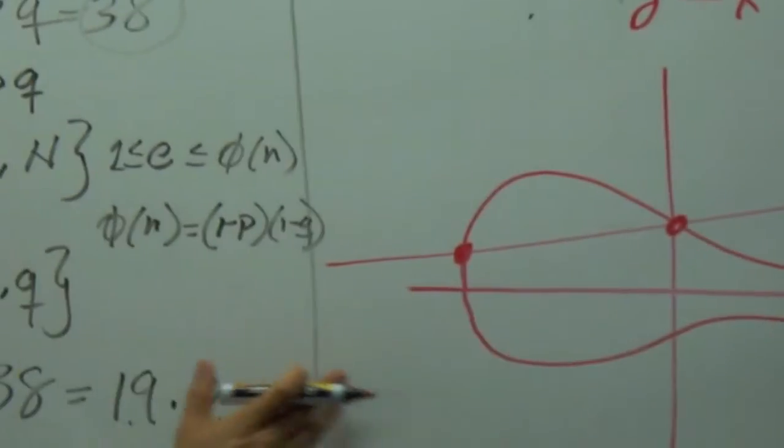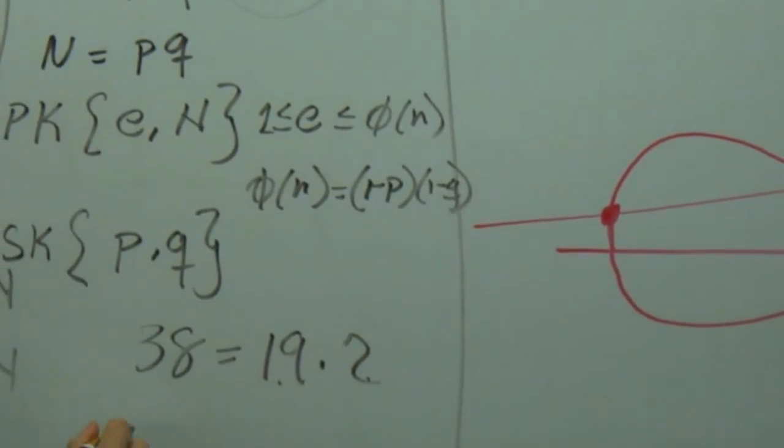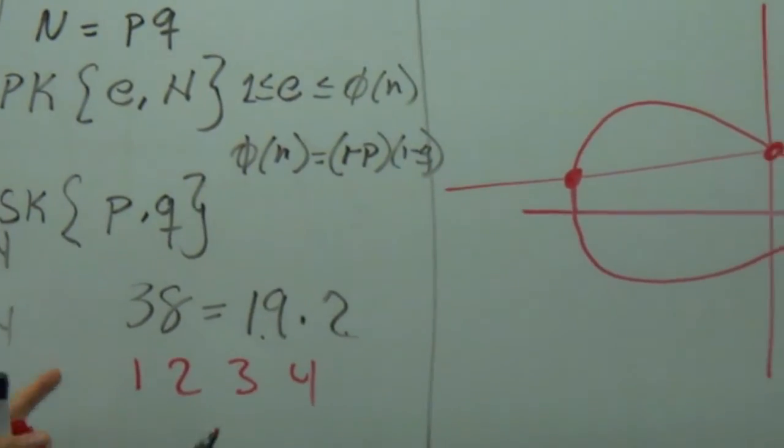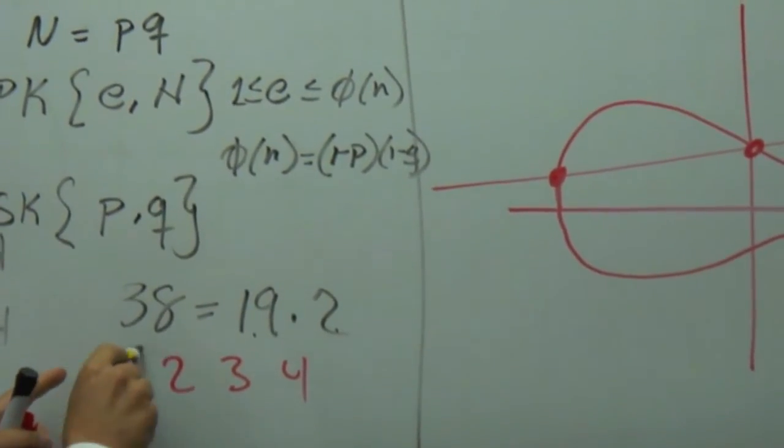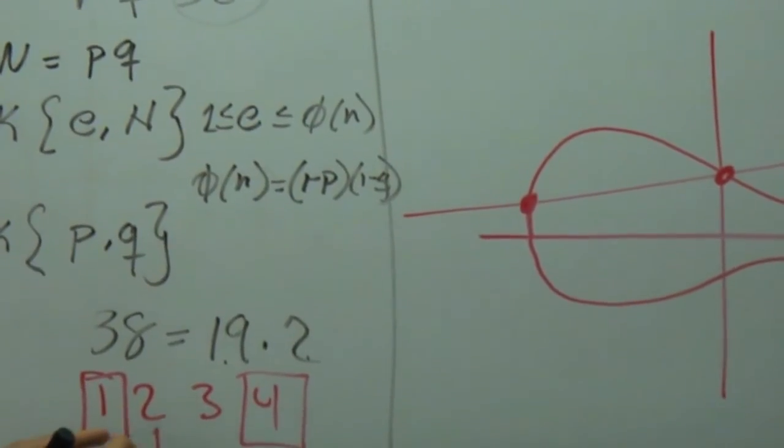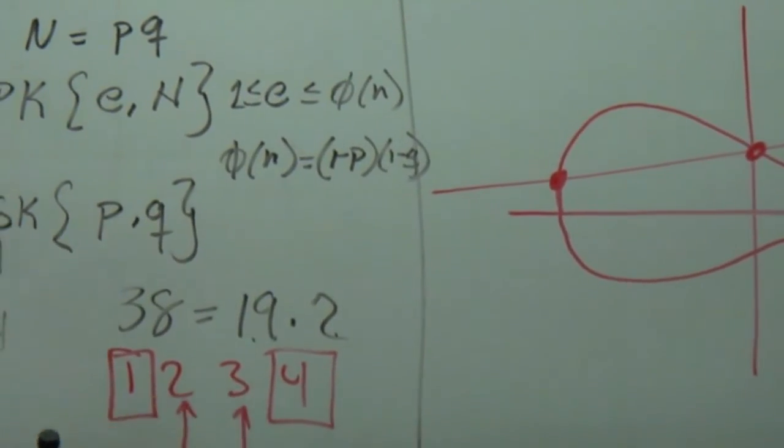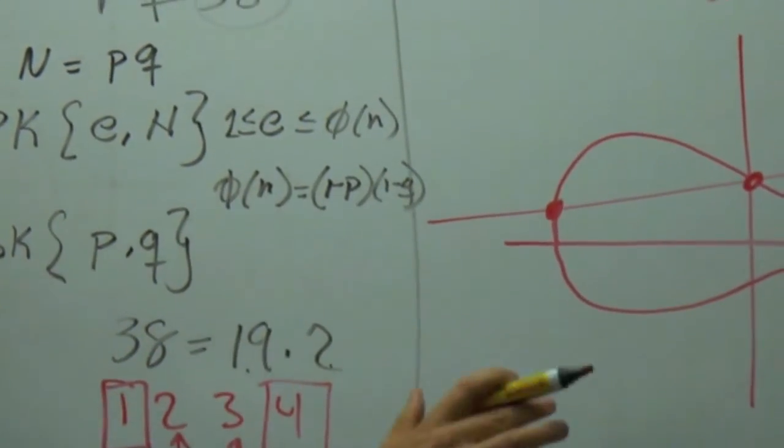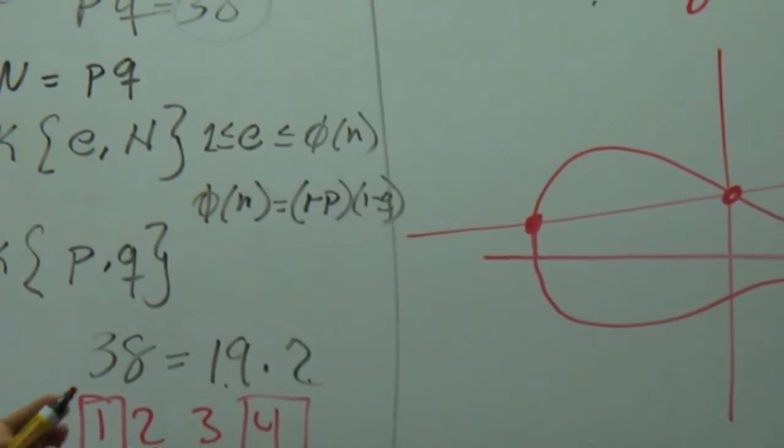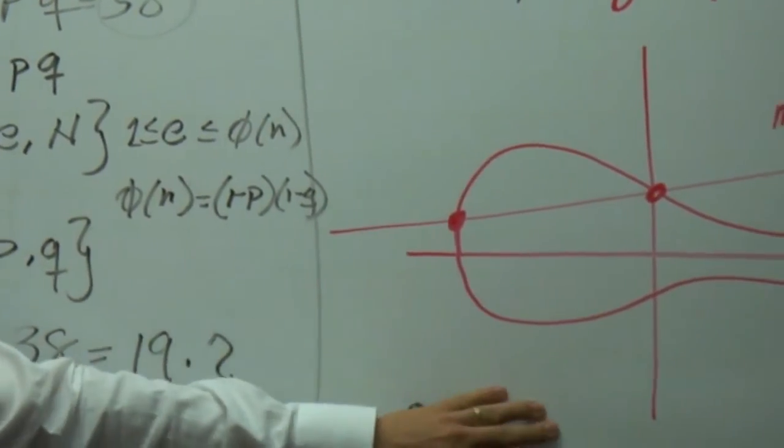In the integer factorization problem, if I have the integer 1, 2, 3, and 4, and I say, how many integers do I have between the integer 1 and the integer 4? The answer is, use this one and this one. Of course, for a large integer, we'll have a lot of numbers. And especially when we do the primary, the prime number factorization.